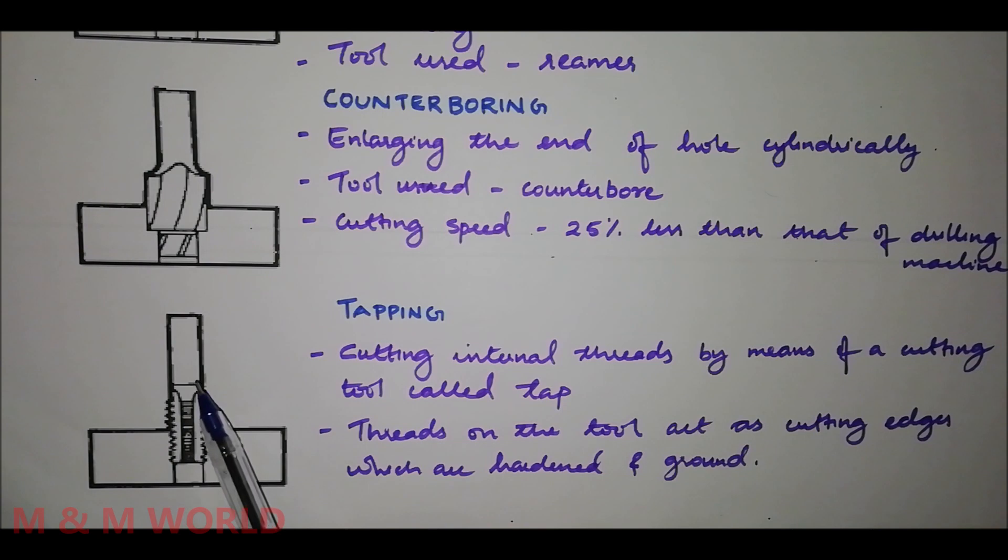This tap may be considered as a bolt with accurate threads cut on it and these threads act as cutting edges. When the tap is screwed into the hole, it removes metal and cuts internal threads which will fit into the external threads of the same size. During this operation, the spindle is rotated at very low speed.